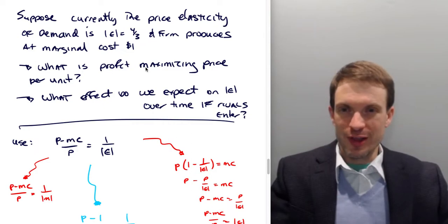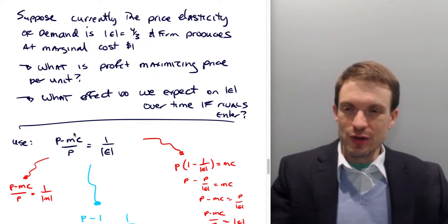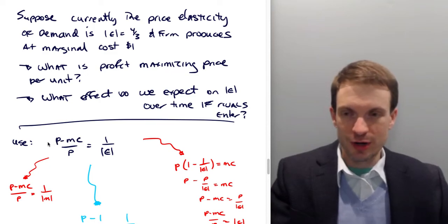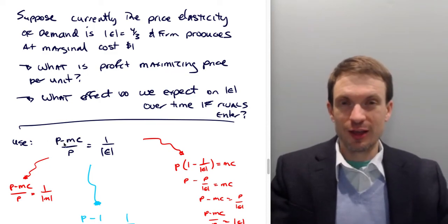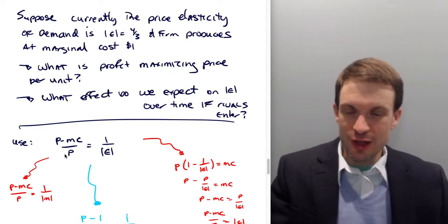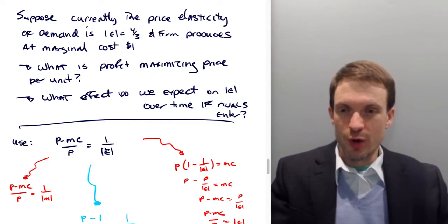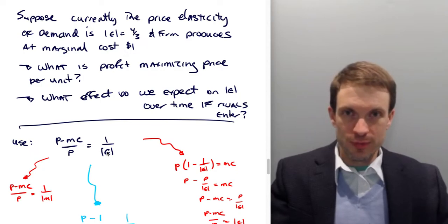Okay, but let's find the profit maximizing price per unit. This is the interesting thing. We need to use the following relationship. This is our percentage markup formula. Price minus marginal cost is the markup. Dividing it by price makes it percentage markup, and this is equal to one over the absolute value of price elasticity of demand.